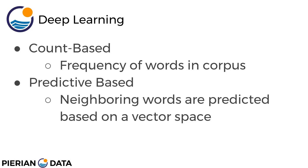Predictive models directly try to predict the word from its neighbors in terms of learned small dense embedding vectors, and these are considered the parameters of the model. Word2Vec is going to take a predictive-based approach where neighboring words are predicted based off the vector space, instead of doing a classical count-based approach where we essentially lose that sort of information.